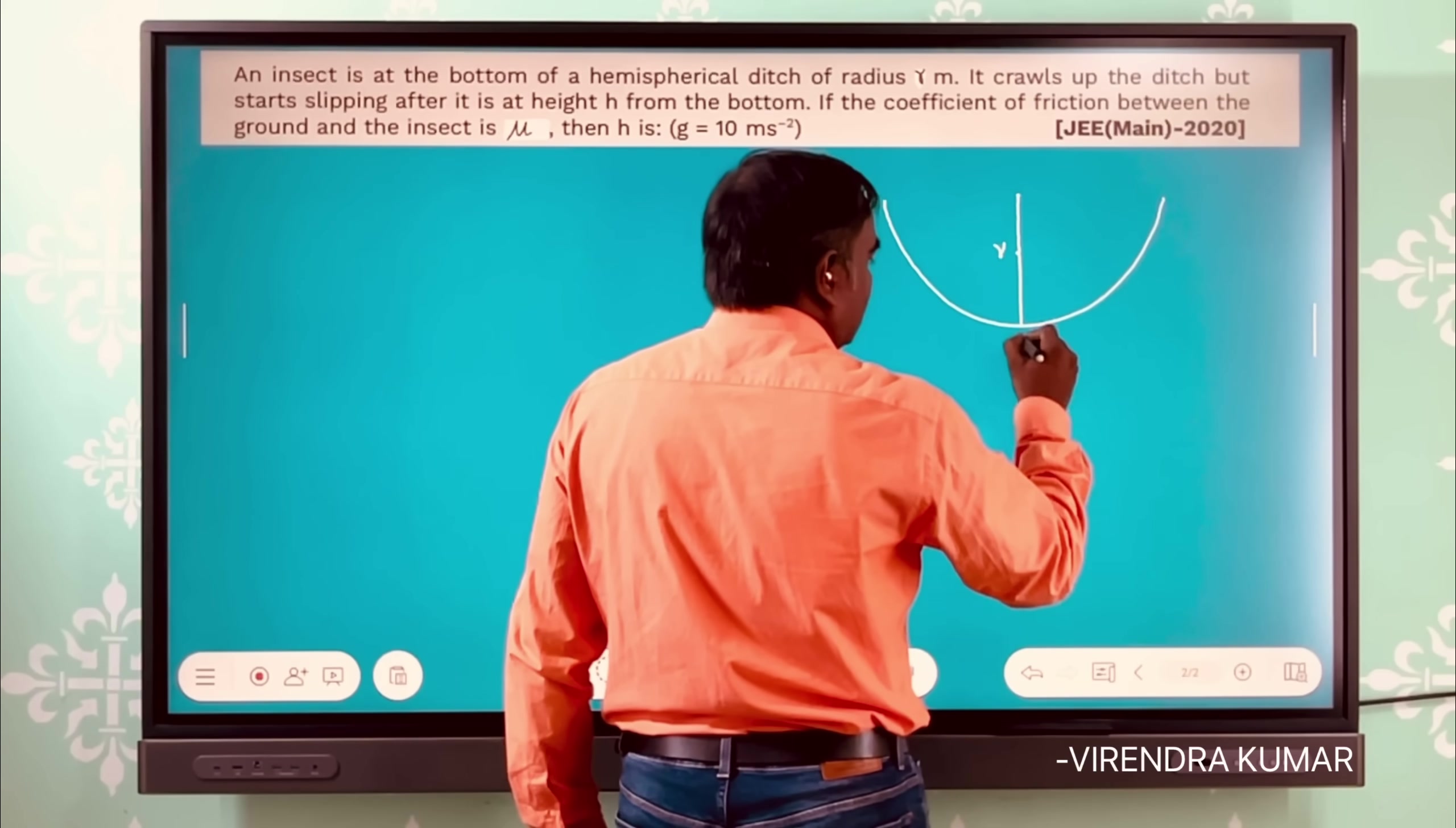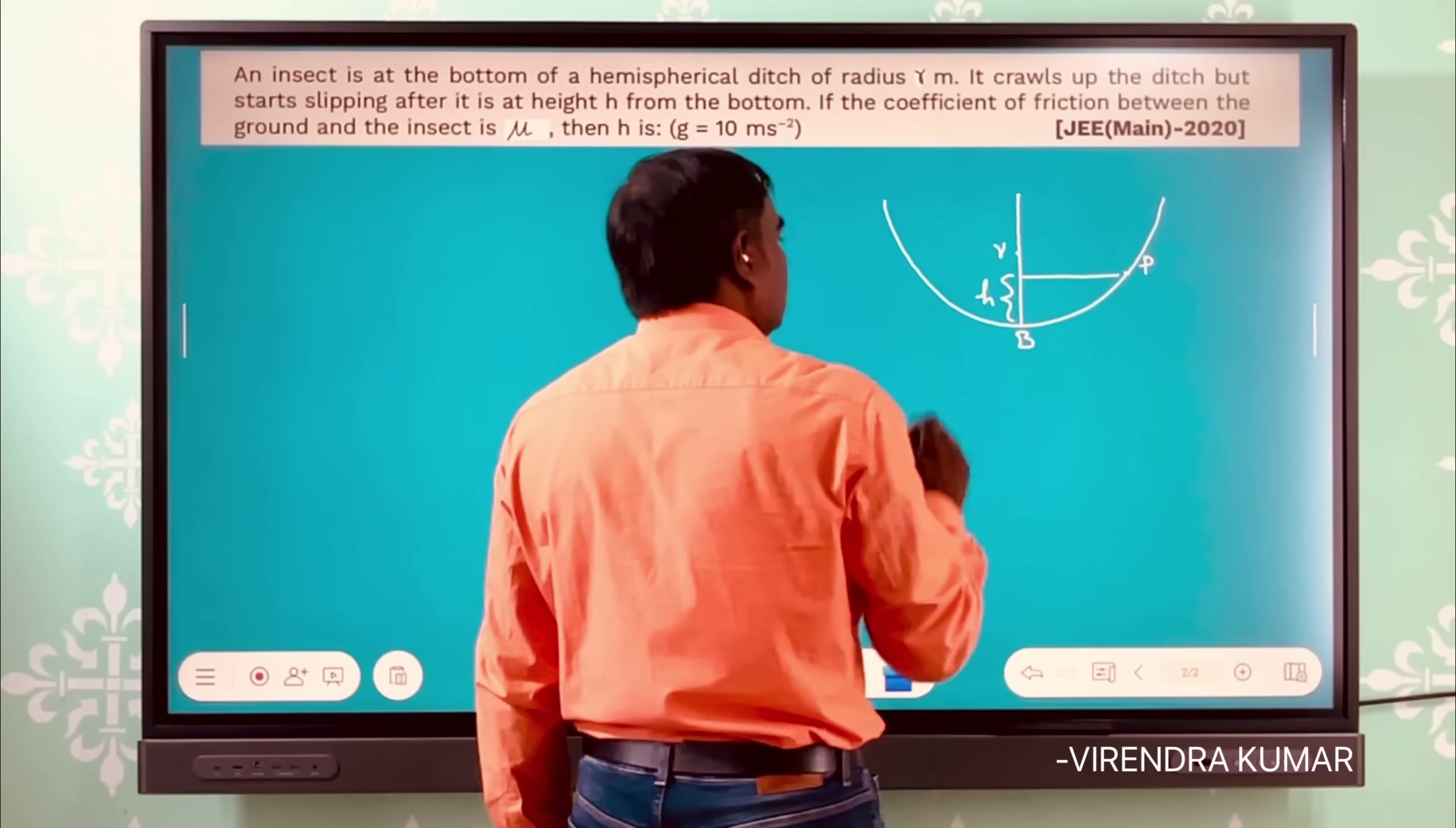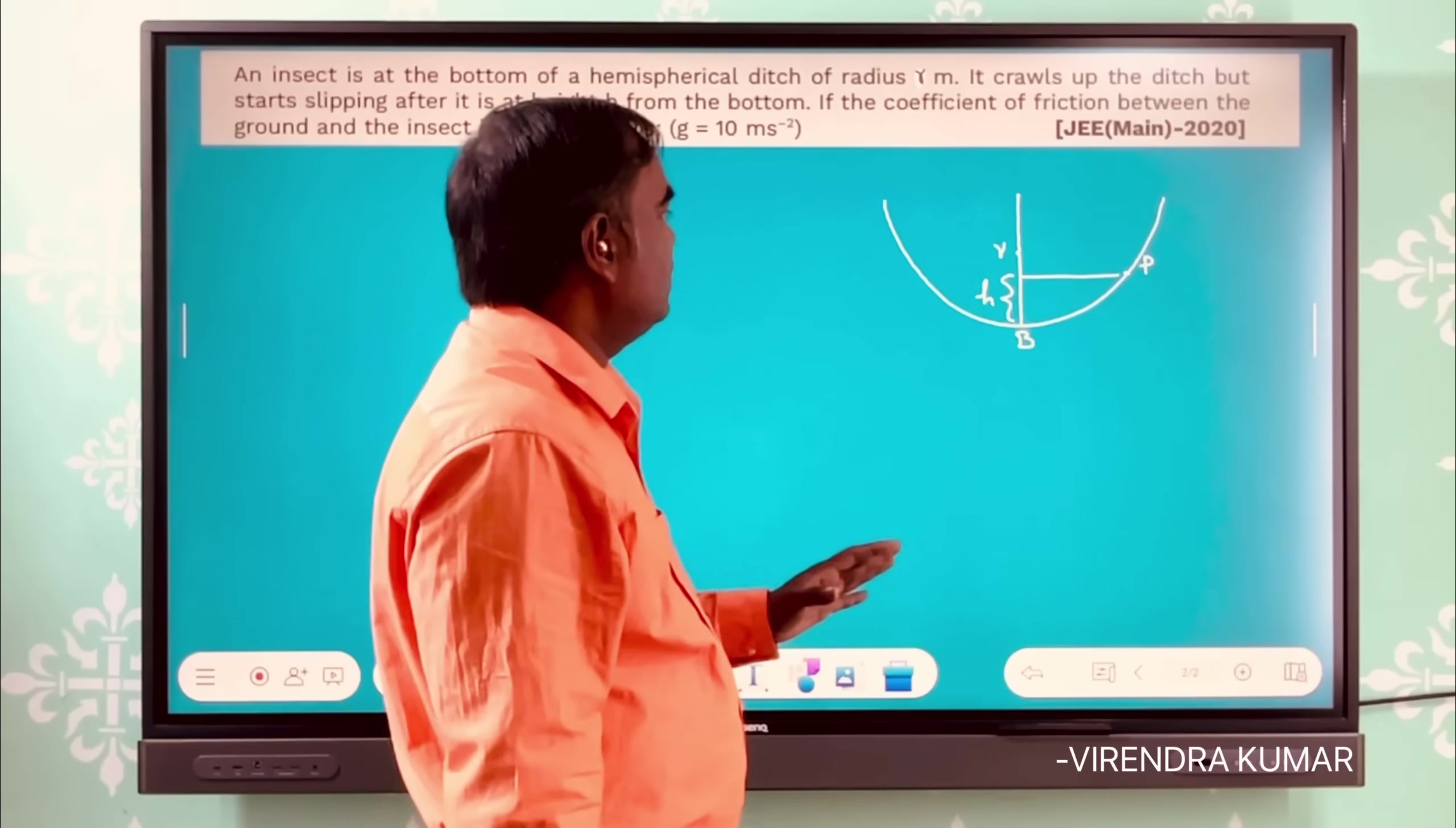...starting from the bottom and it moves upwards. It is crawling, and this is - suppose this is at point P. It covers the height h from the ground, and afterwards as it crawls up it slips down. So you have to find the height up to which the insect is able to crawl, right?